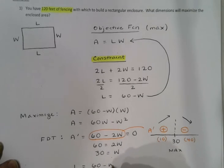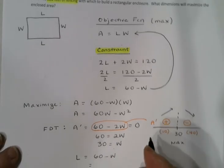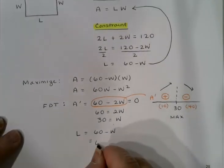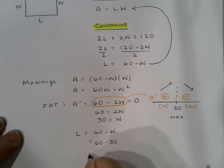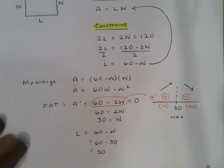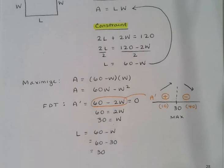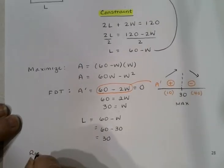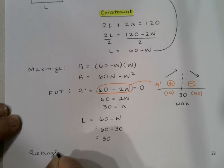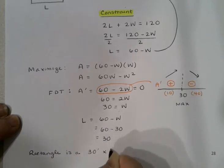I can do that by just plugging right back into the constraint. The length is 60 - W, so that would be 60 - 30, giving me 30 for the length as well. So it looks like I need to build a square, length and width both 30 feet. So my rectangle should be a square, 30 feet by 30 feet.